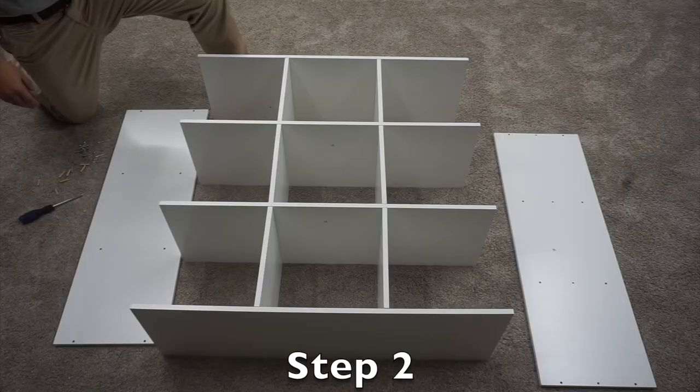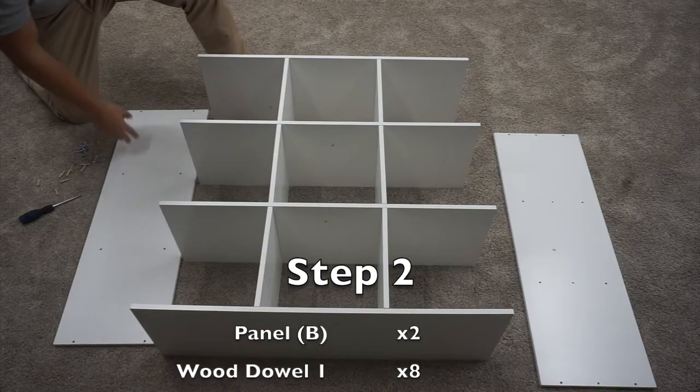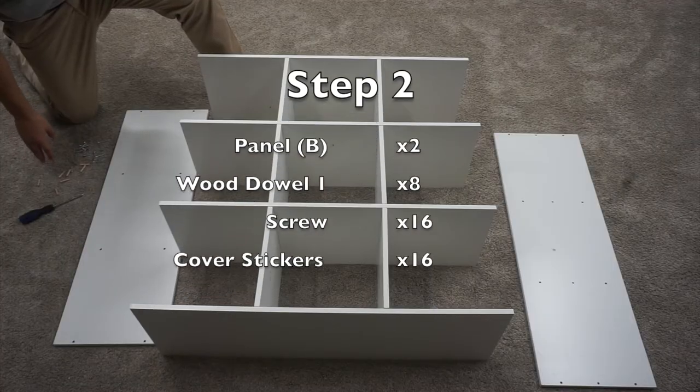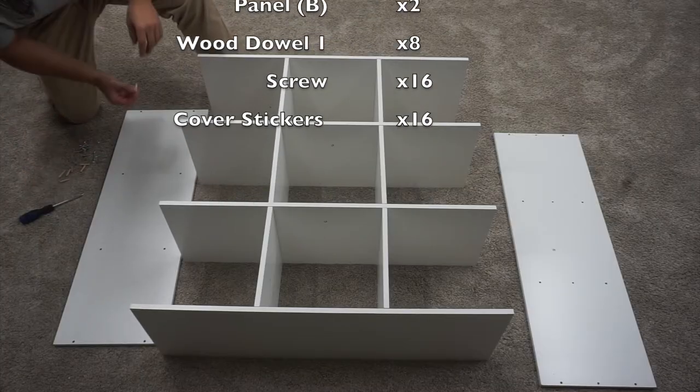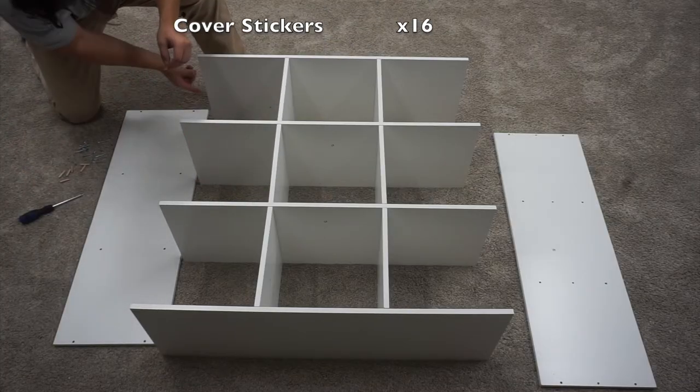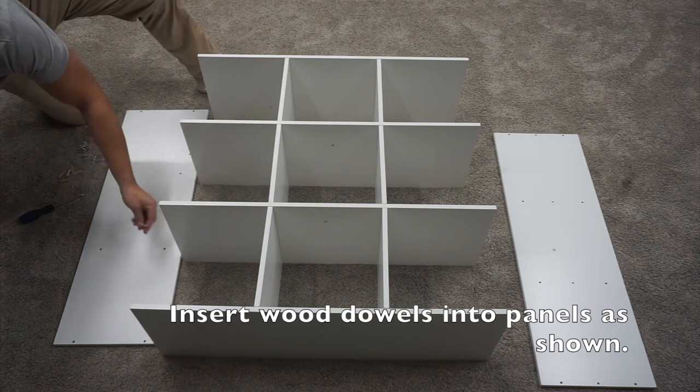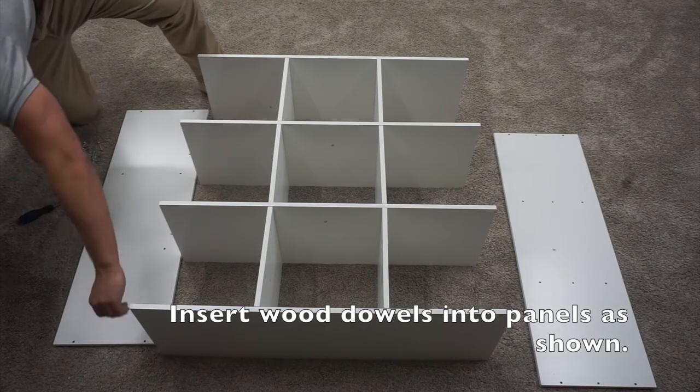For step two, you're going to want to take your two B panels, 16 screws, and eight wood dowels. Start by inserting the wood dowels into the middle pre-drilled hole. There should be four on each side.